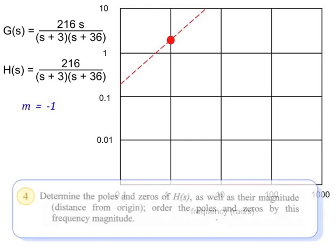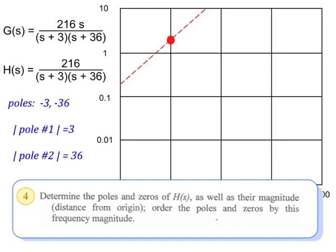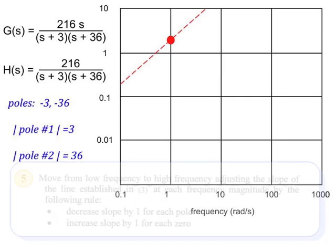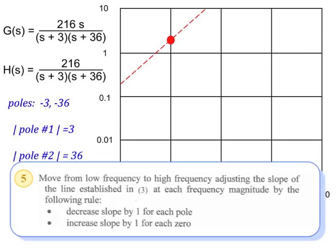Now we record the poles and zeros and their frequency magnitudes. We have a pole at minus 3 and a pole at minus 36, so the magnitudes are 3 and 36. This dictates where the slope of our line will change — it will change at 3 radians per second and at 36 radians per second. And at both spots, the change will be a decrease in slope by 1.